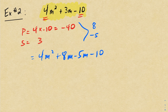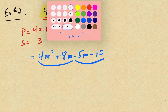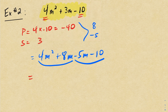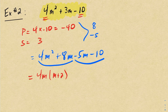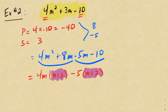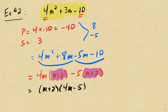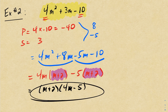So now I'm going to replace that 3m with an 8m minus 5m, and put that negative 10 back down. Using factor by grouping, I'll look for a GCF in the first two terms, which is 4m, leaving me with m plus 2. For the next two terms, I'm going to factor a minus 5 out — you should always factor a minus sign out when you can — leaving me with m plus 2. We again have a common factor of m plus 2. So factoring that out, I'm left with 4m minus 5. The fully factored form is 4m minus 5 times m plus 2. Multiplication is commutative, so the order doesn't matter.